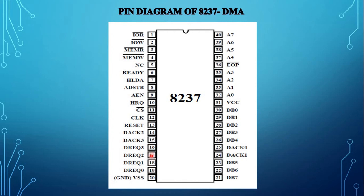Pin numbers 16 to 19 are DREQ0 to DREQ3, the DMA request input lines. These signals are used by IO devices to request a DMA transfer. Pin number 20 acts as the ground signal, that is VSS.